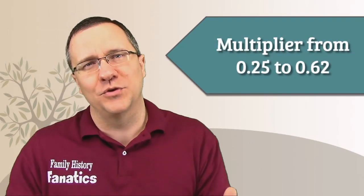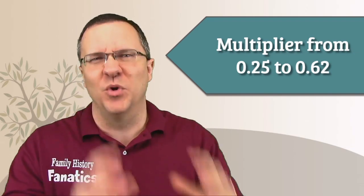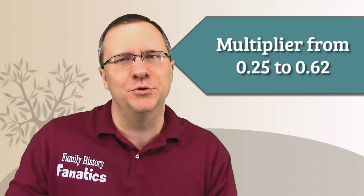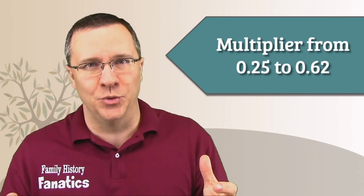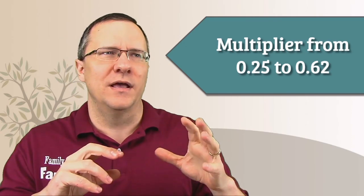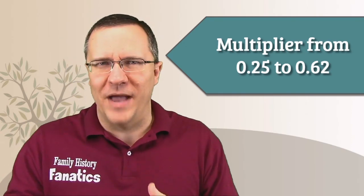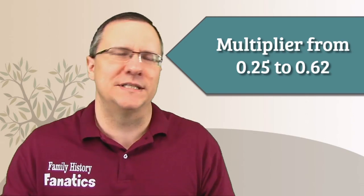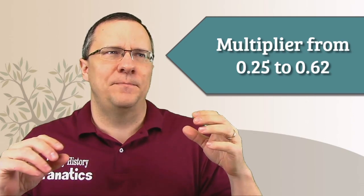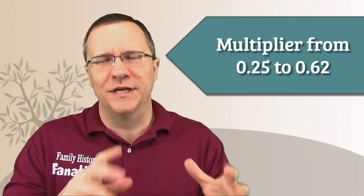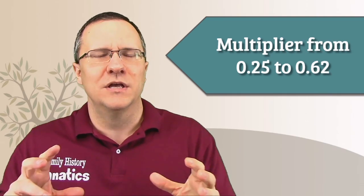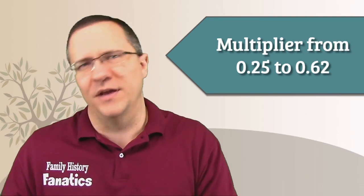Now what this resulted for me was it created a multiplier from about 0.25 to about 0.62 that I'm using with the number of matches and the quality matches which I'll get to in a second. And basically what this does is this actually brings those two numbers down more so that they are comparable with some of the other criteria.